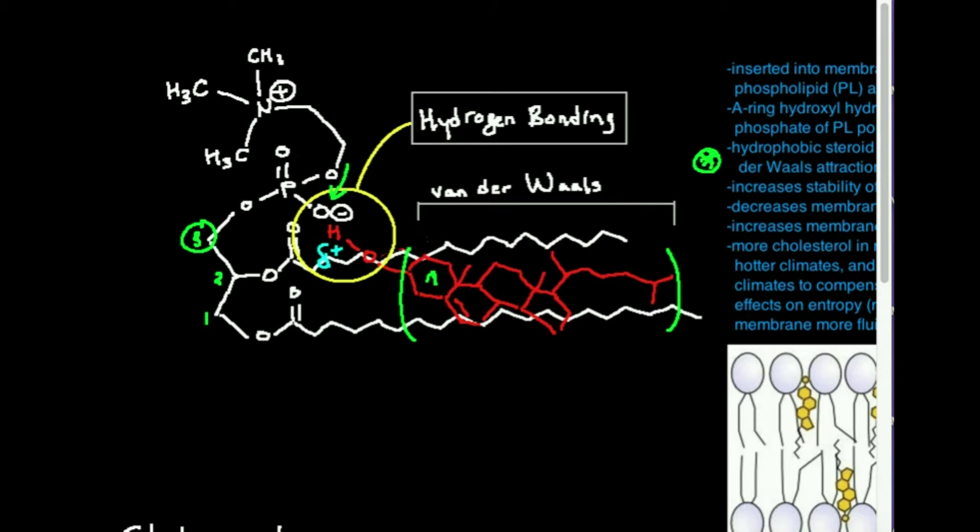We said that cholesterol, the hydrogen on this OH group on the A-ring has a partial positive. I have a positive charge there, a negatively charged phosphate. Those are going to tend to want to attract each other, and in fact, if you also consider the fact that there's van der Waals attractions in this region, and now you have a hydrogen bond between cholesterol and the polar head, that greatly adds to the stability of the membrane in regions where you have lots of cholesterol.